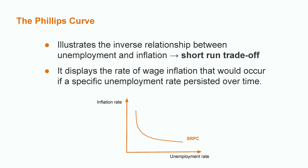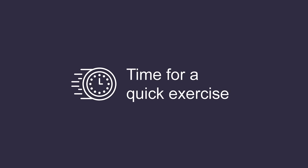Economic growth is associated with many positive things, such as increases in consumption, investment, employment, and wages. This can generate inflation since the cost for firms will be higher. This inverse relationship is reflected on the graph. As you may see, the short-run Phillips curve is downward sloping. This curve is supposed to display the rate of wage inflation that would occur if a specific unemployment rate were maintained over an extended period of time.